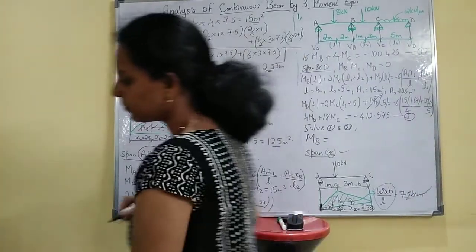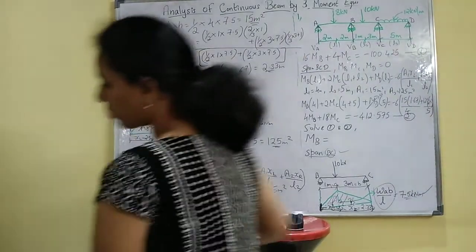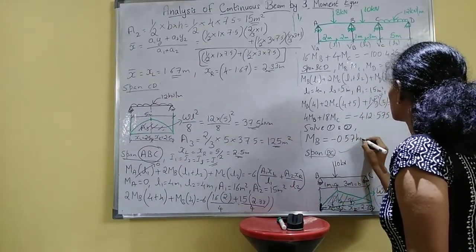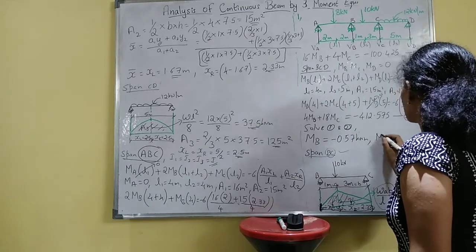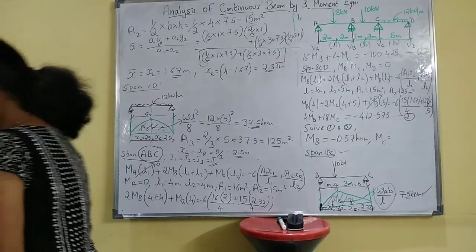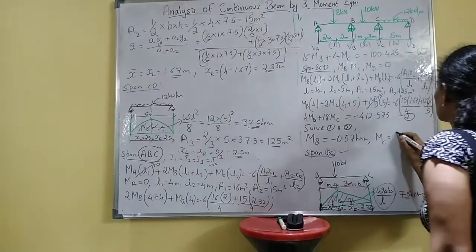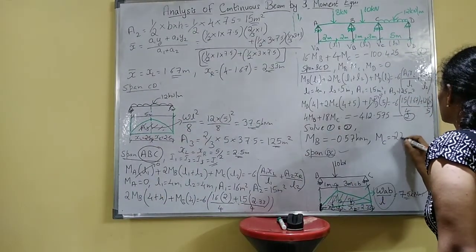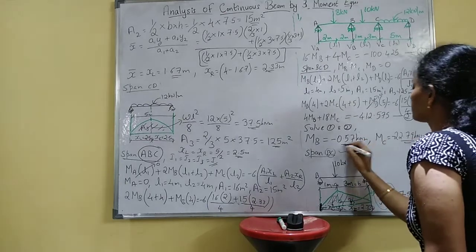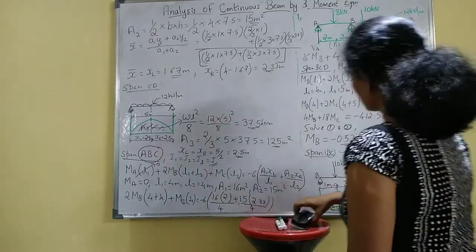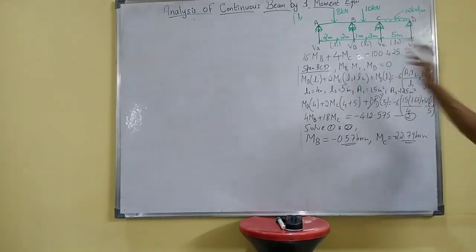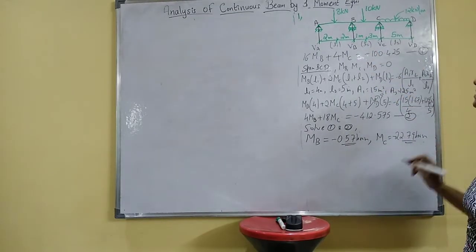Solving Equations 1 and 2 simultaneously gives MB = −0.57 kNm and MC = −22.79 kNm. Next, draw the shear force diagram and find the reactions VA, VB, VC, and VD.